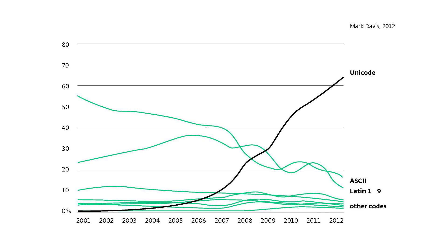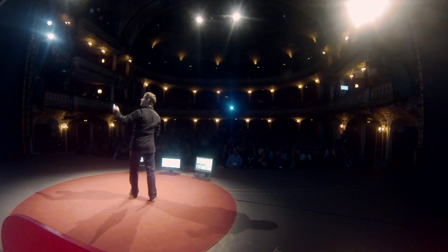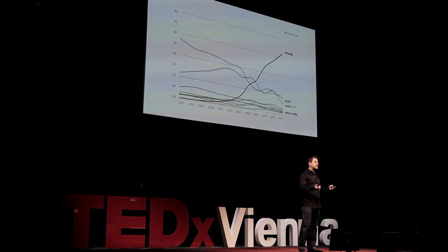Meanwhile, Unicode has become a real success story. Mark Davis, the president of the Unicode Consortium, proudly published a graph showing that more than 60% of all web pages are now encoded in Unicode. And if you add good old ASCII, which is now a subset of Unicode, more than 80% of web pages are encoded. The world is speaking with one code — that's fantastic.